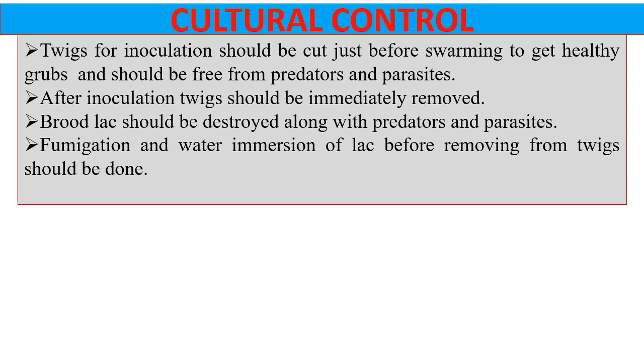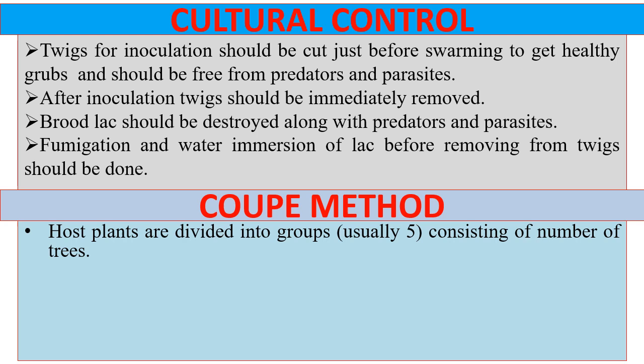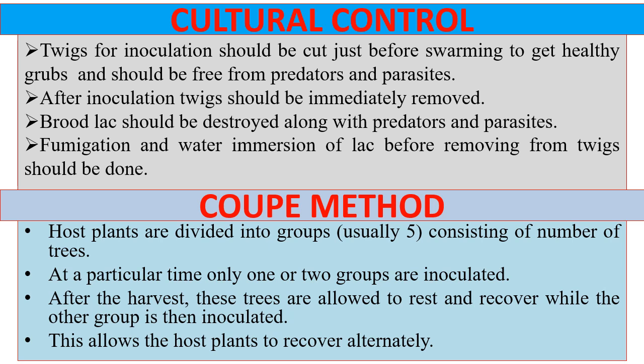Under cultural control, we have the Coup method. In this method, host plants are divided into groups consisting of a certain number of trees. At a particular time, only one or two groups are inoculated. After the harvest, these trees are allowed to rest and recover, while the other group is then inoculated. This allows the host plants to recover alternately.